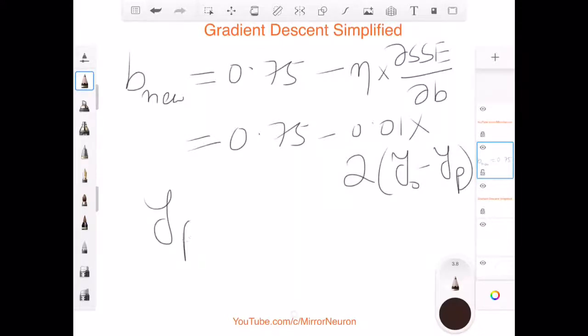So y_p was calculated using this formula mx plus b, x being the individual square feet area. This was nothing but 0.45 times x plus b which we saw in our previous Excel spreadsheet. But again we are going to do the same calculation but this time we are going to use the new value of m and b and let's see that in an Excel spreadsheet.